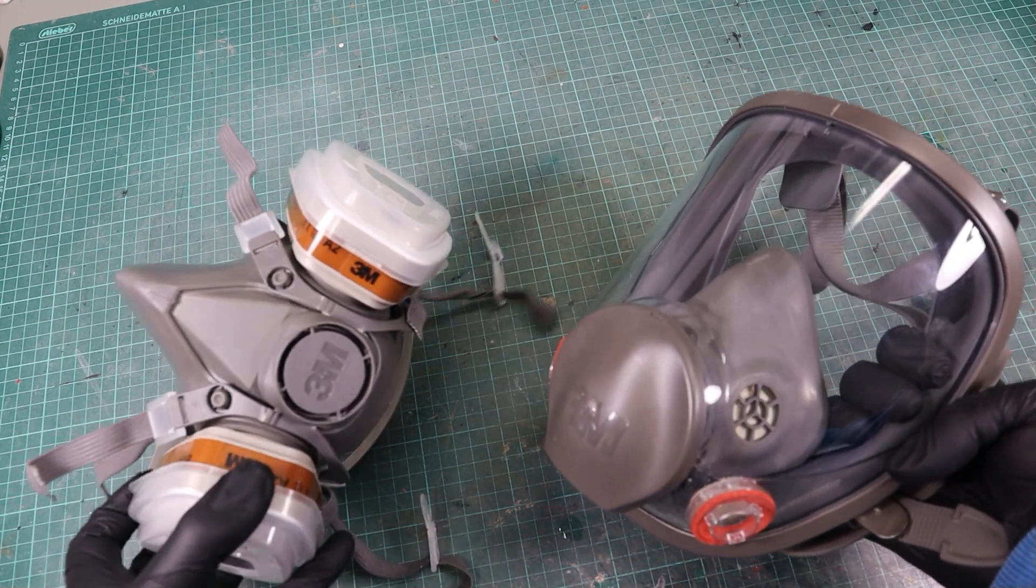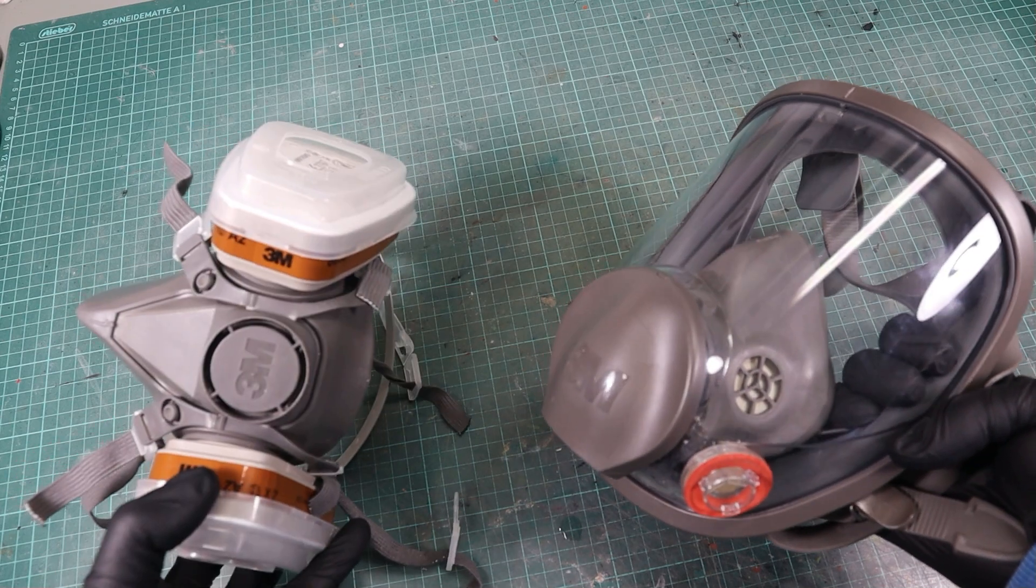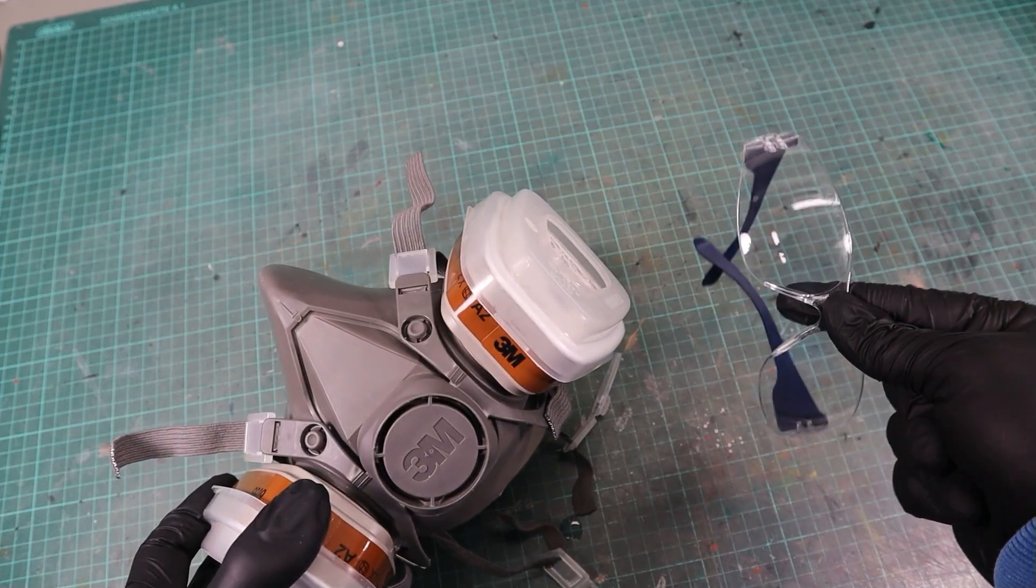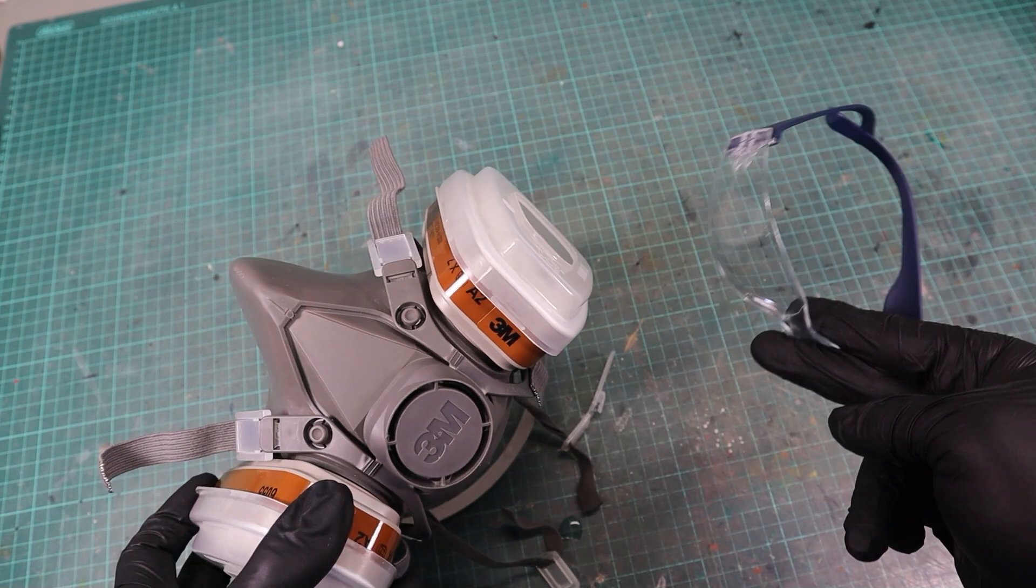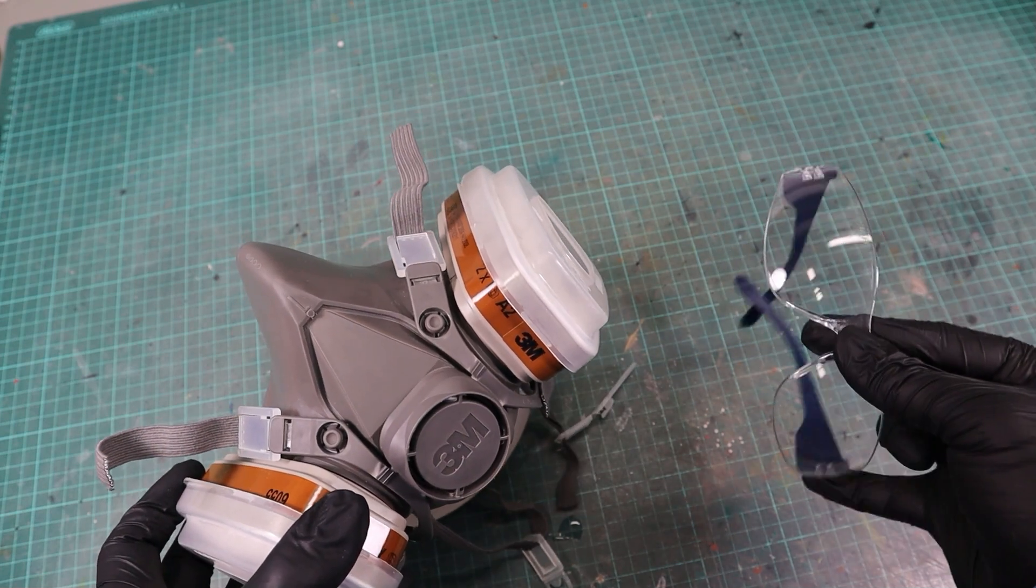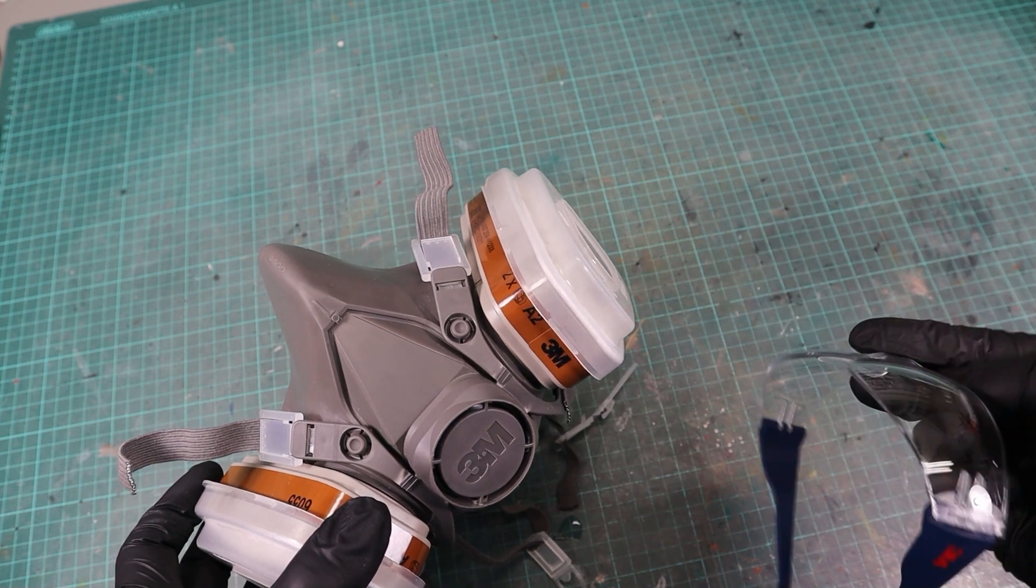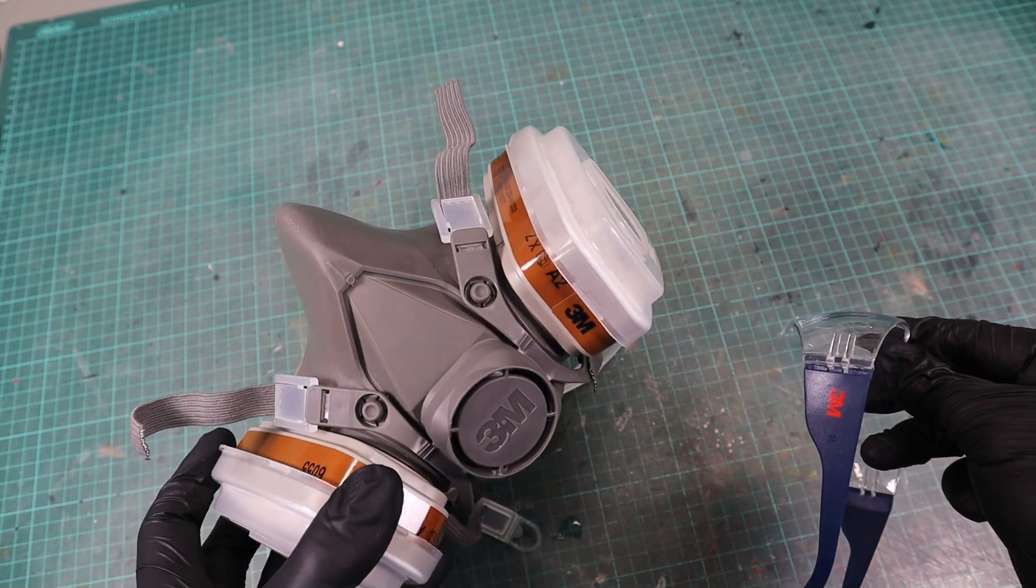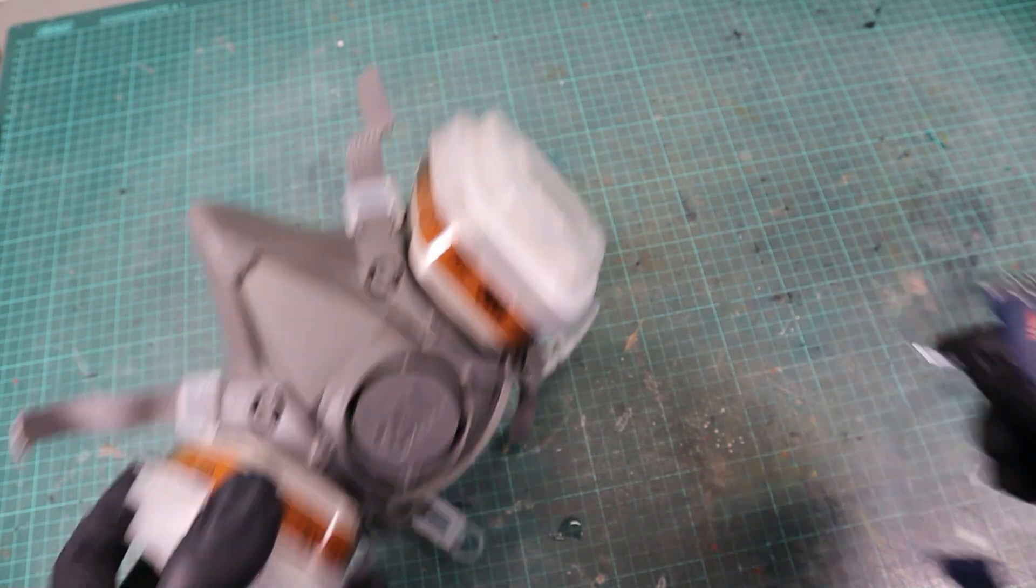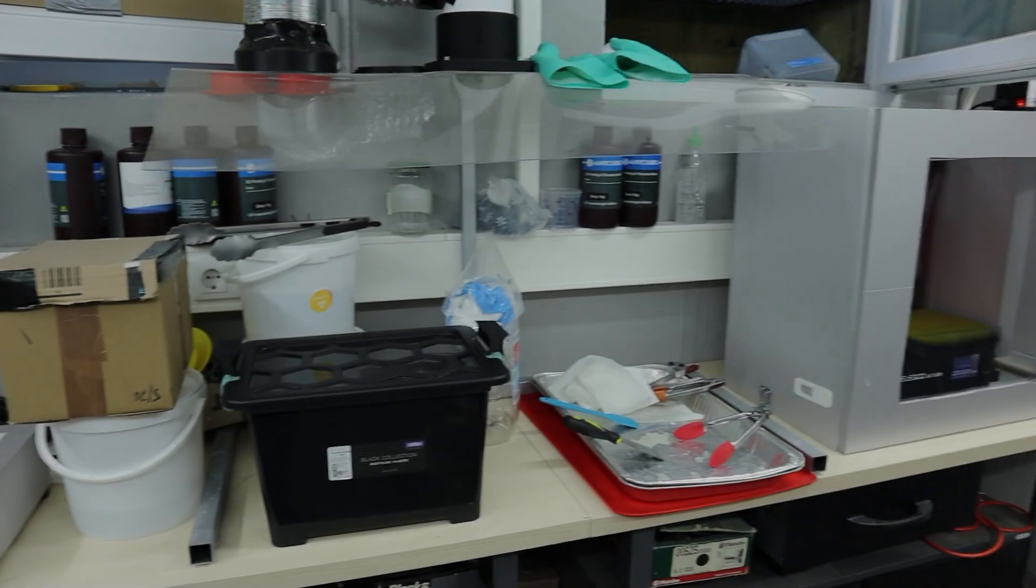I recently switched to a full mask because I had the problem with safety goggles that they always fogged up. Remember, it's crucial to safeguard your eyes too, especially when removing supports that can fly around. Accidents can and will happen, but by following these safety precautions we can minimize any risk. Let's do a quick check: what kind of personal protective equipment do you use when you work with resin?